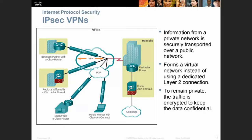The different types of VPN connections include an ASA firewall, a SOHO with a Cisco router, Cisco AnyConnect for a mobile worker, a business partner LAN-to-LAN with a Cisco router, or a regional office with a Cisco ASA firewall. The firewall provides more features for protection — especially for banks.